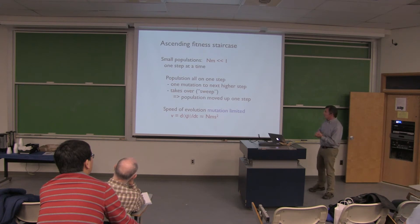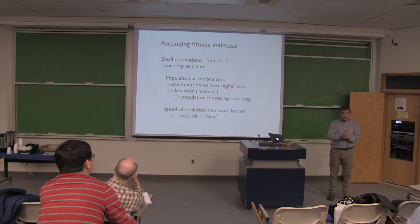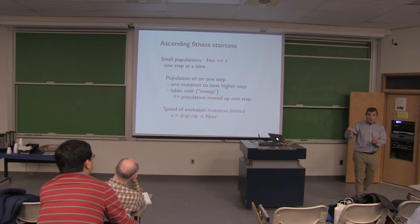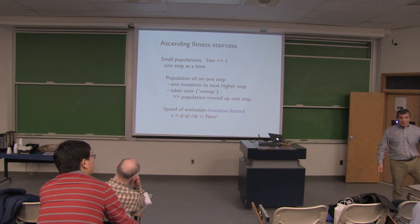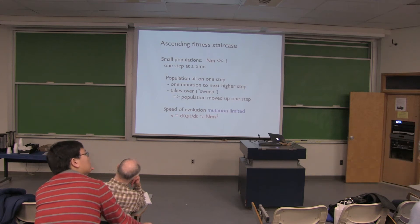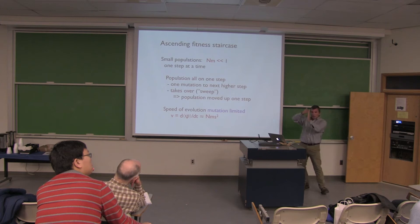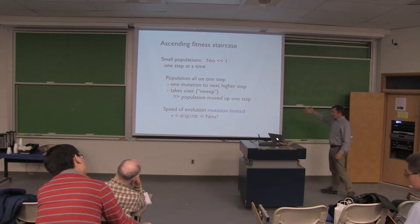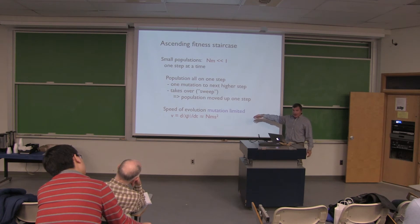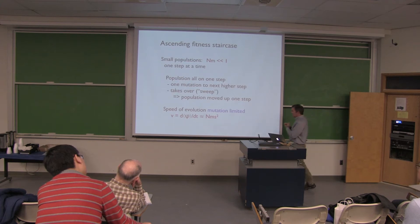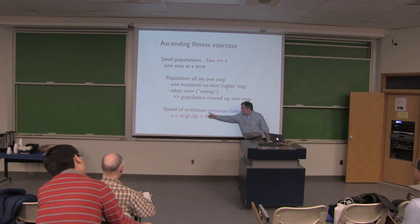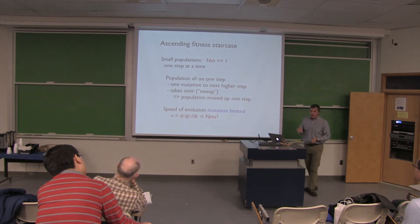In a small population, most of the time the population sits on one step. Then one individual gets a good mutation, steps up to the next level, grows rapidly, and takes over the population. Then another steps up, and so on — going up one step at a time with pauses. In this classical situation, the rate at which the population goes up the staircase — the rate of fitness increase — is limited by mutations. So it's population times mutation rate that sets the rate of evolution.